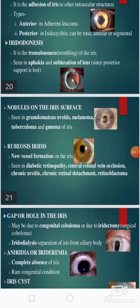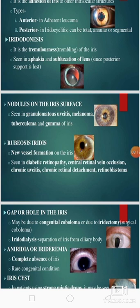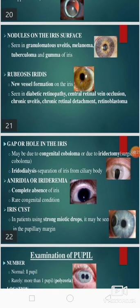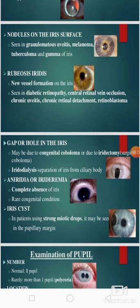Then there is the term iridodonesis — it is the tremulous trembling of the iris, seen in aphakia and subluxation of lens. Then nodules of the iris surface are seen in granulomatous uveitis, melanoma, trabiculoma, and gumma of the iris.